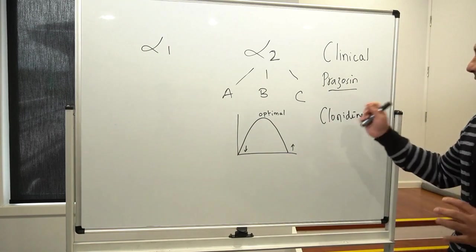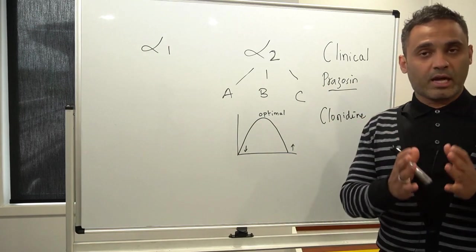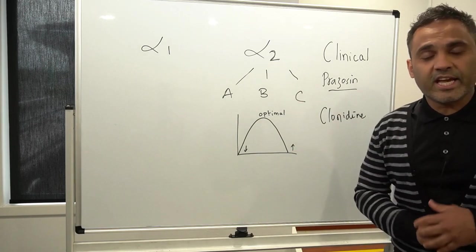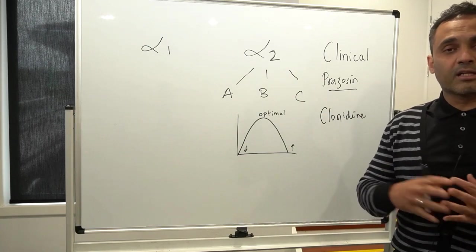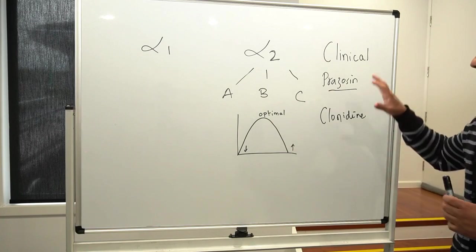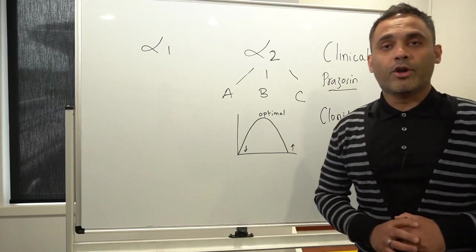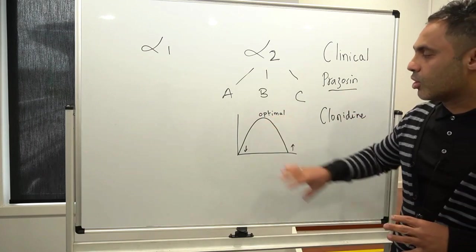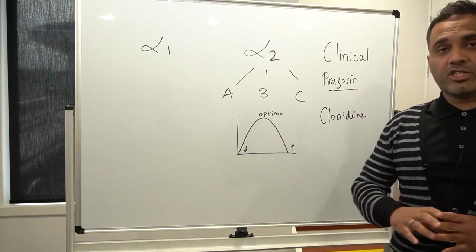Besides clonidine one other agent that I did mention that was an alpha-2 agonist was guanfacine. Guanfacine is predominantly used in ADHD in children and of course can be used in adults as well at higher doses but I won't be going into that in more detail because I predominantly wanted to focus on the norepinephrine activity in post-traumatic stress disorder and of course the norepinephrine activity in ADHD as well.